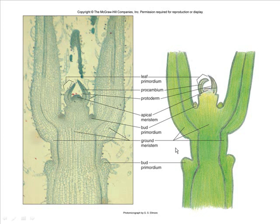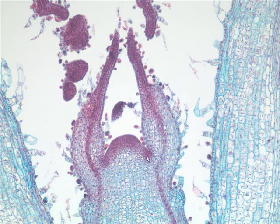Let's look at the slide. Here we have a coleus stem tip. What is this region right here? It is the apical meristem. As far as the primary meristems are concerned, we see first these strips coming down through here — that is procambium on its way to being xylem and phloem. On the outside would be protoderm. And everything else — all this stuff in here — is ground meristem.